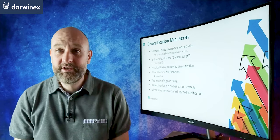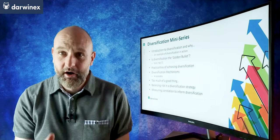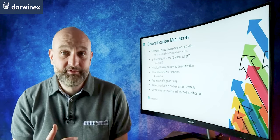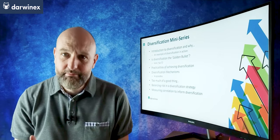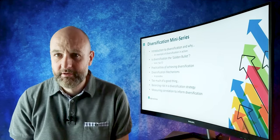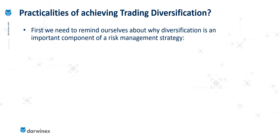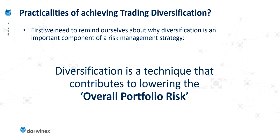Now we start to look at some of the practicalities of implementing a diversification strategy, and I also examine some of the differences between what that really means for discretionary traders compared with algorithmic traders. The first thing to remind ourselves about is the importance of diversification as a component of your risk management strategy. The definition we came up with was that diversification is a technique that contributes to lowering the overall portfolio risk.